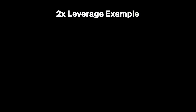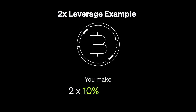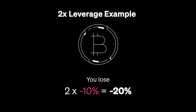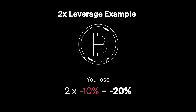Leverage is a double-edged sword, amplifying both potential gains and losses. For instance, with 2x leverage on Bitcoin futures, a 10% price increase results in a 20% gain, while a 10% drop doubles your losses. It's crucial when using leverage to monitor your margin ratio closely. Falling below a specific threshold could trigger a liquidation of your position. We recommend starting with lower leverage to minimize liquidation risk, especially for beginners.